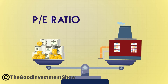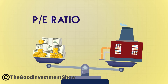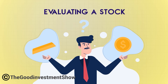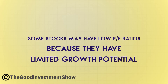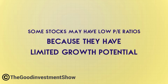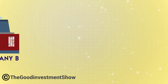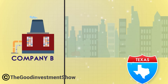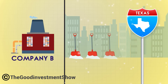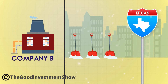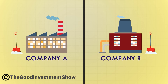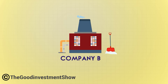Although the P-to-E ratio is the most common valuation measurement, it isn't the only indicator that should be used when evaluating a stock. For instance, some stocks may have low P-to-E ratios because they have limited growth potential. If Company B only sells snow shovels in a state where there isn't much snow, then it isn't as likely to grow. However, if both companies are expected to grow at similar rates, then Company B could be the better value based on its P-to-E ratio.